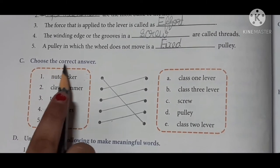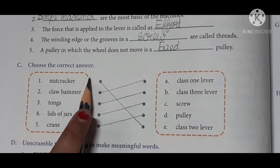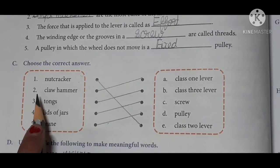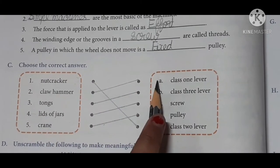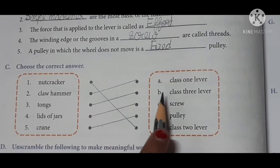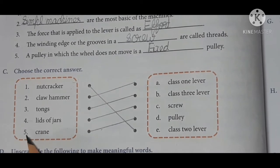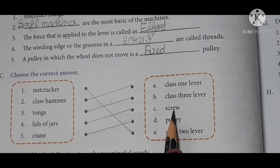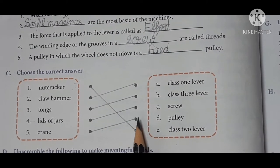Exercise C, choose the correct answer. First, nutcracker. Nutcracker is an example of class 2 lever. Second, claw hammer. It's an example of class 1 lever. Third, tongs. It's an example of class 3 lever. Fourth, lids of jar. Lids of jar is an example of screw. Fifth, crane. Crane is an example of pulley.